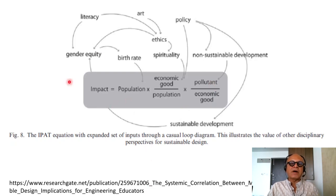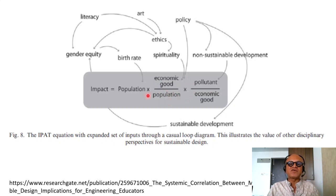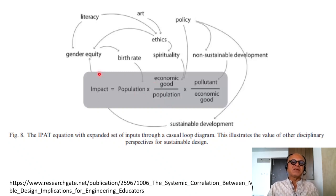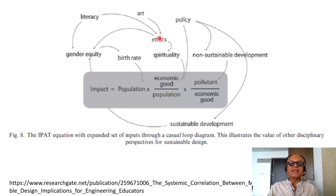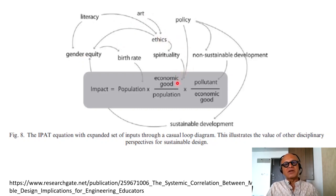This paper tries to add details not considered when you aggregate everything into these simple terms. While IPAT has a certain charm in its simplicity, impact can also depend on gender equity, which affects birth rate and population. It can also affect ethics, spirituality, and consumption, and ethics can affect literacy and gender equity in return. Art can affect ethics, and policy can affect consumption regulations.